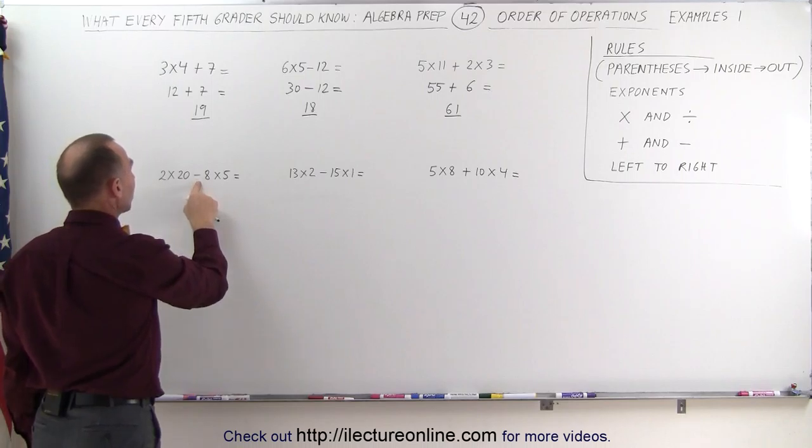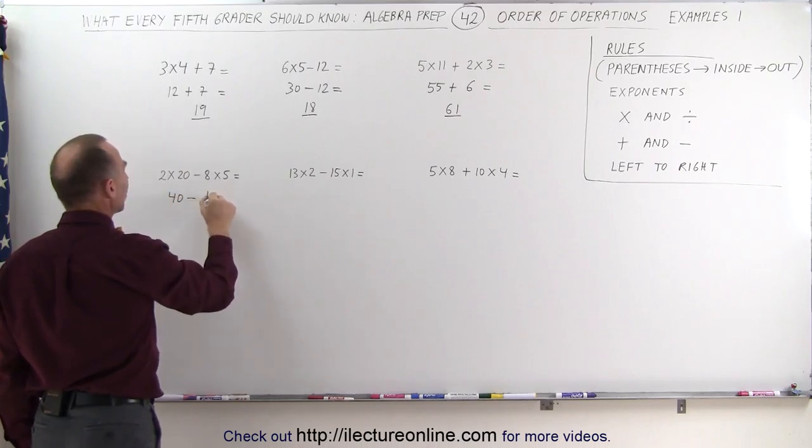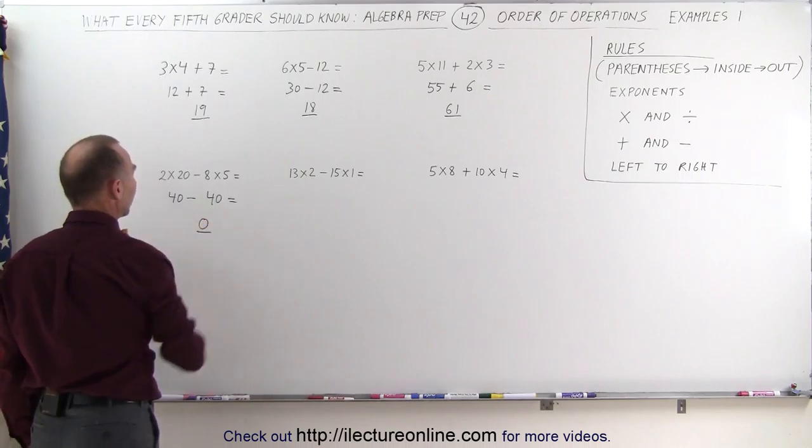Our next problem is the same, except instead of an addition, we have subtraction here. But again, we do the multiplications first. 2 times 20 is 40, minus 8 times 5, which is 40. And 40 minus 40 is 0, and that's the final answer.